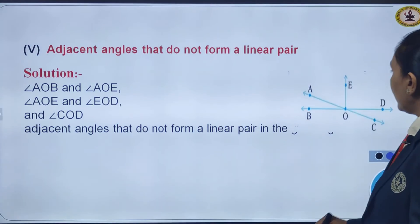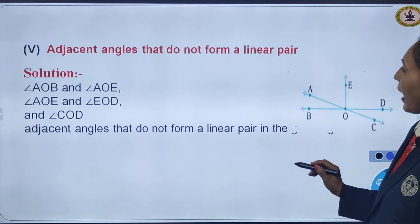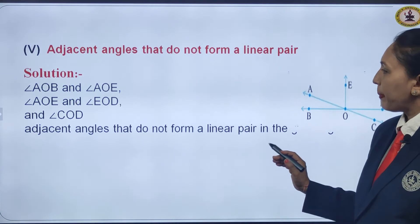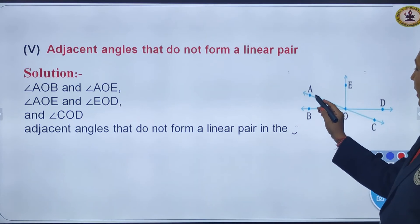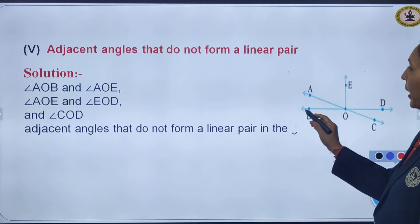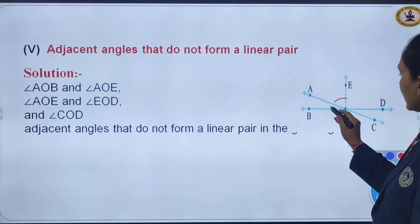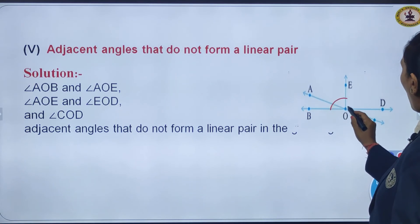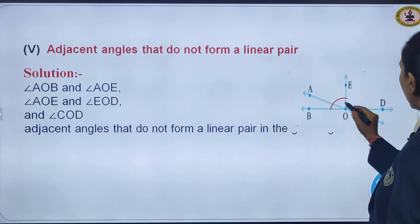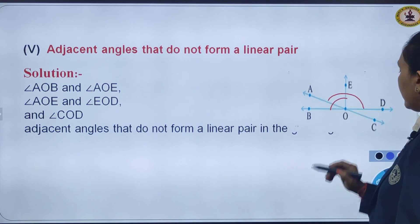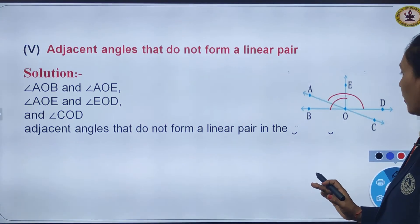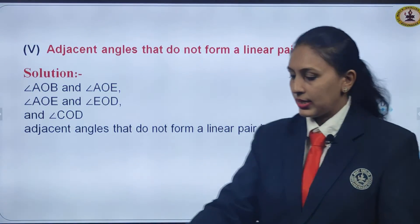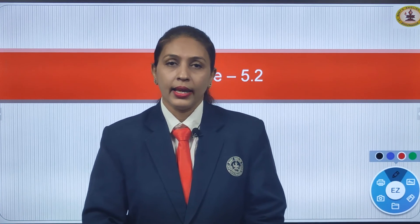The last part: adjacent angles that do not form a linear pair. From the figure, angle AOB and angle AOE are adjacent but do not form a linear pair. Also, angle AOE and angle EOD are adjacent but do not form a linear pair. That completes exercise 5.1. Study well — bye bye.